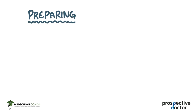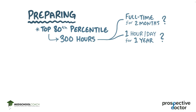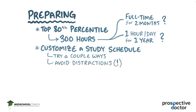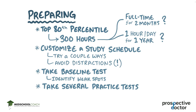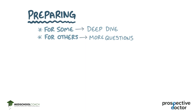In terms of preparing for the MCAT, students in the top 80th percentile clock in at about 300 hours of consistent, regular study time. That could mean studying full-time for two months, or studying one hour a day for a year. You should customize a study plan that fits your time frame and try a few different ways of preparing to see what works best for you. Think about how and when you like to study best, and make sure you're able to do it without distractions. It's really helpful to take a baseline test to identify your weak spots so you can focus on them, and you should take several practice tests to see how you improve. For some people that might mean taking a deep dive on a topic they don't feel comfortable with; for others, it means practicing more questions to get used to answering quickly.